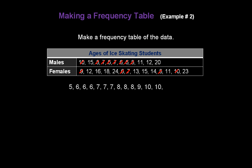Continuing through the data: two tens, two elevens, two twelves, one thirteen, one fourteen, a couple of fifteens, one sixteen. There is no seventeen. Eighteen — no nineteen. One twenty. There is no twenty-one or twenty-two, but there is a twenty-three and a twenty-four.